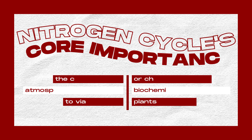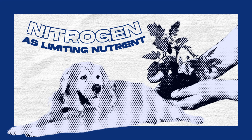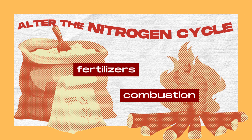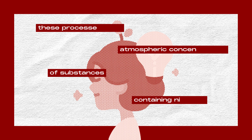As discussed, the nitrogen cycle's core importance is the conversion of atmospheric nitrogen gas to viable forms or chemicals for the biochemical processes of plants and animals. Numerous natural ecosystem processes are constrained by the amount of available nitrogen. Thus, as a limiting nutrient, nitrogen will increase the development and production of plants. We may be unable to alter the nitrogen cycle or fix nitrogen biologically, but we certainly do so industrially through the combustion of fossil fuels and the use of fertilizers, which raise atmospheric concentrations of substances containing nitrogen.